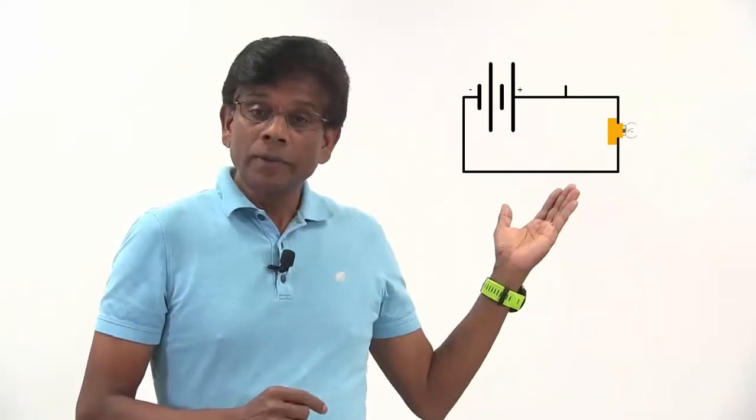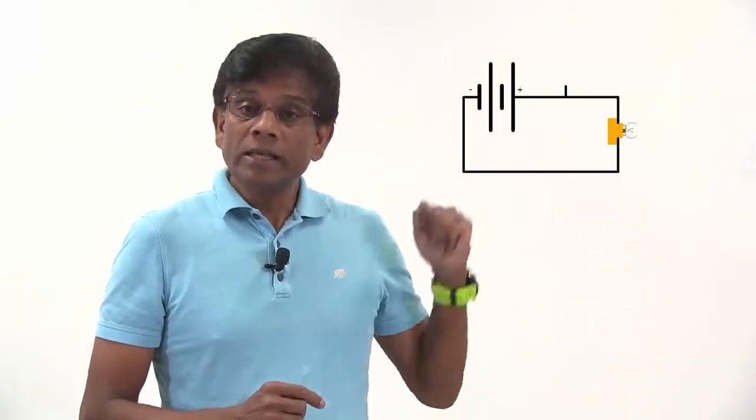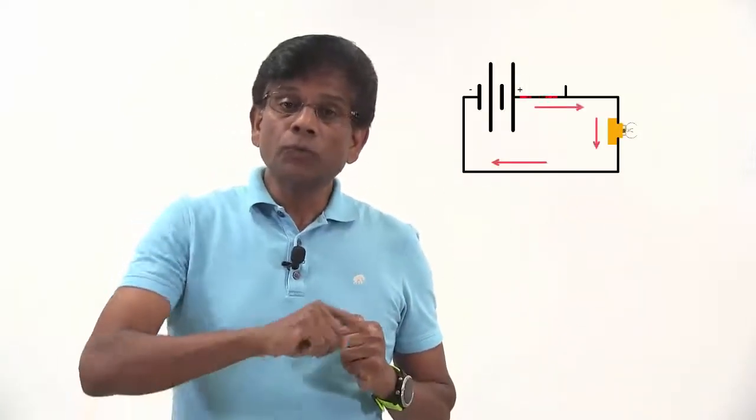To understand the phenomenon of short circuit, let's look at a simple electrical circuit consisting of a battery, switch and a bulb as shown here. You can see in this circuit, current flows from the battery to the bulb and the bulb lights up.